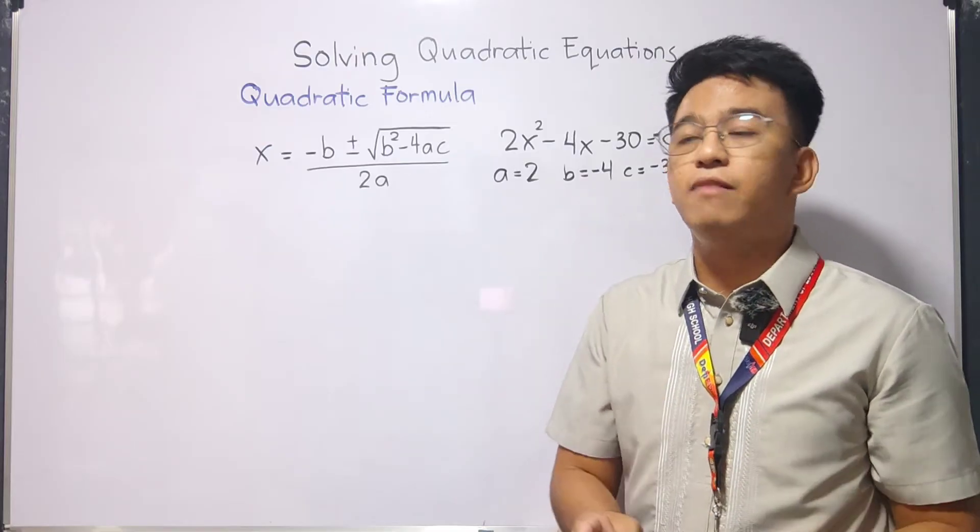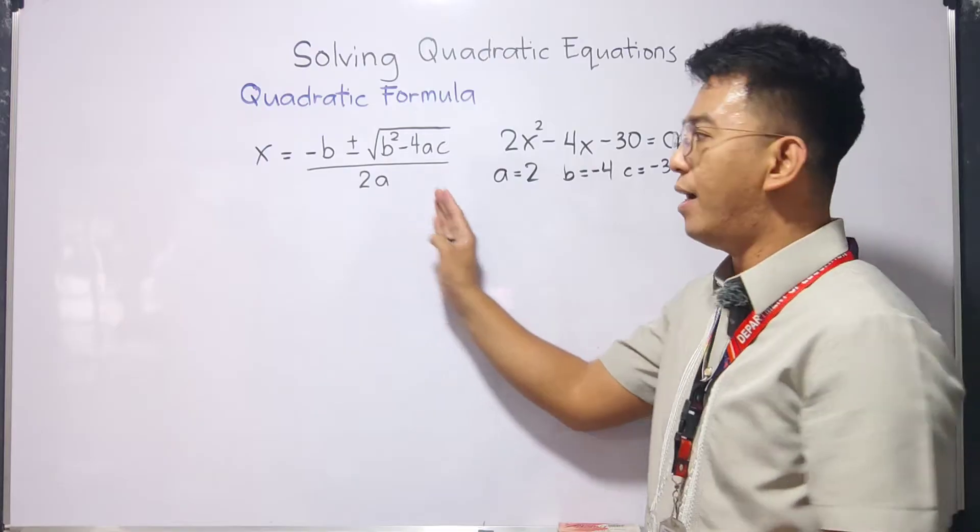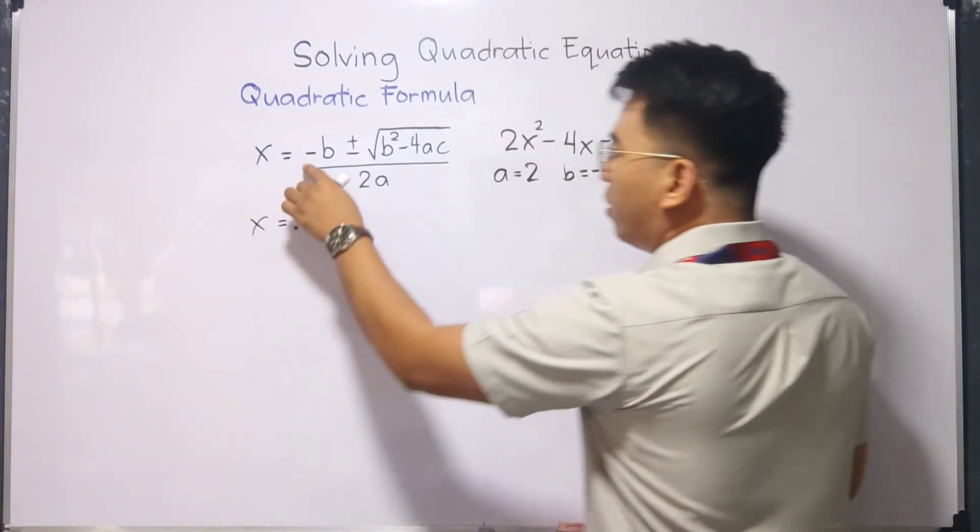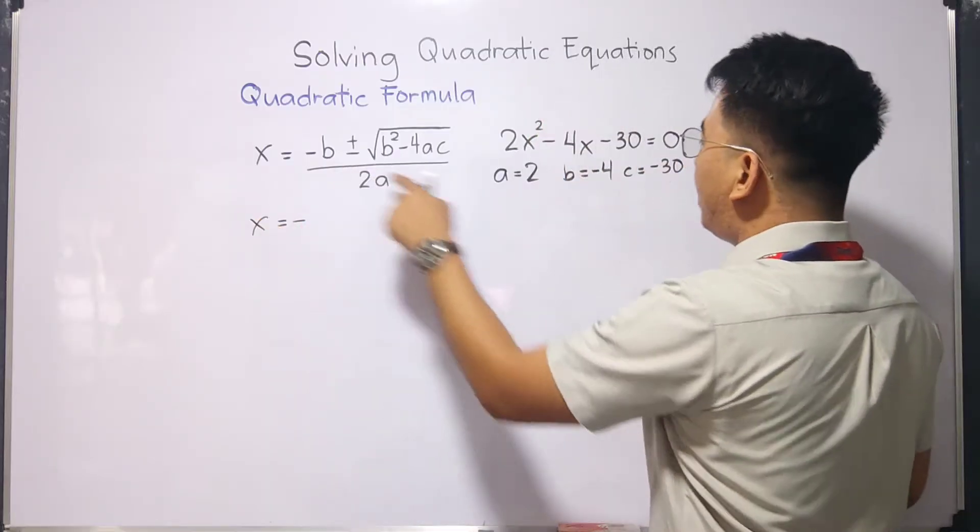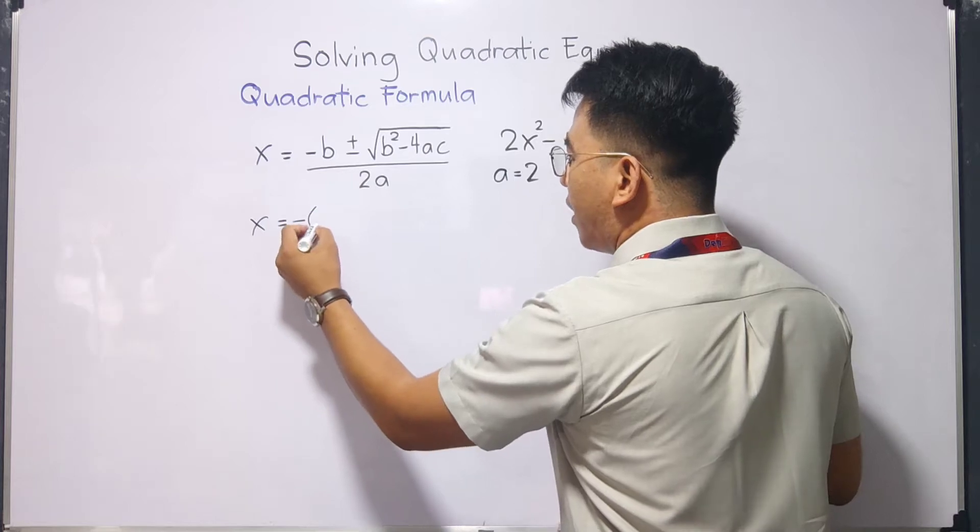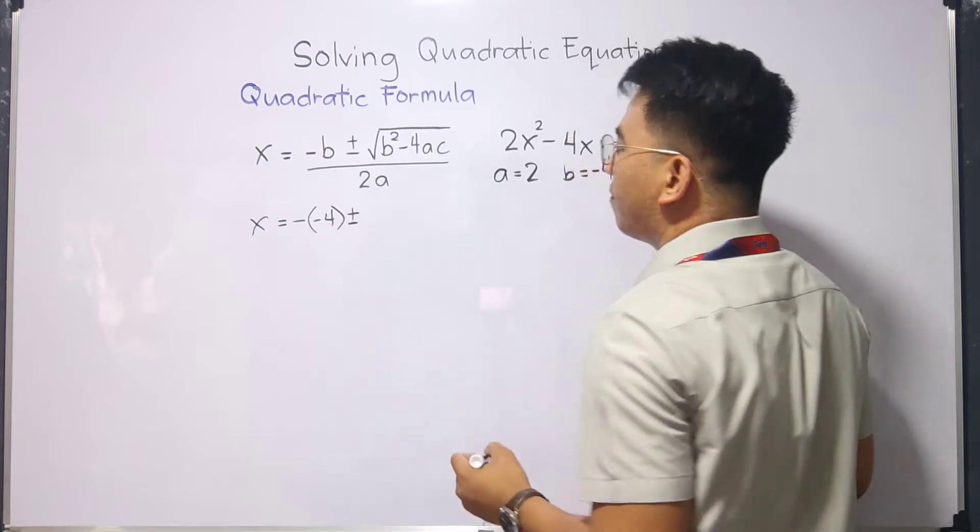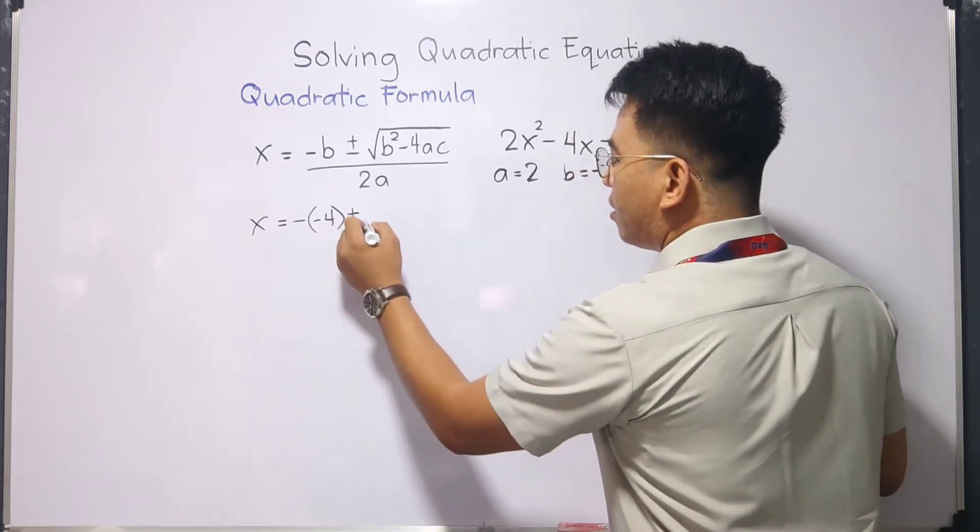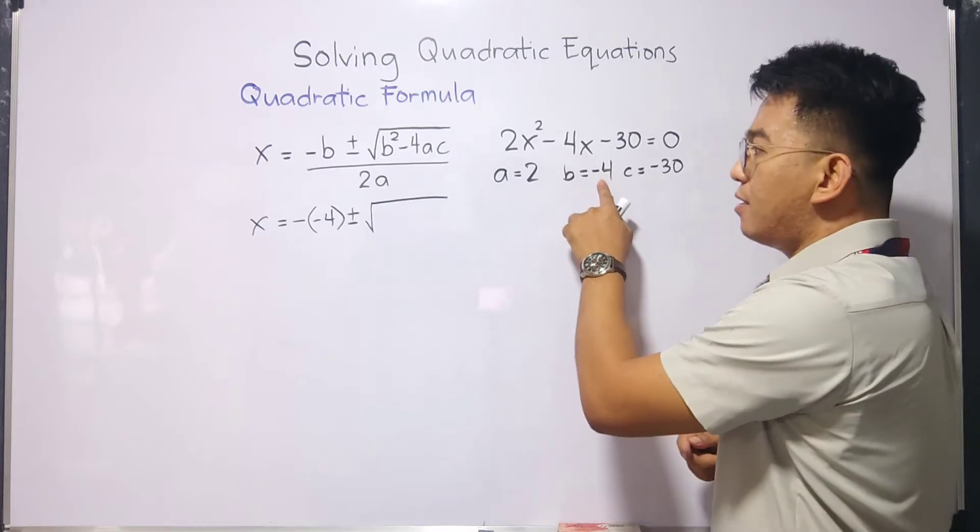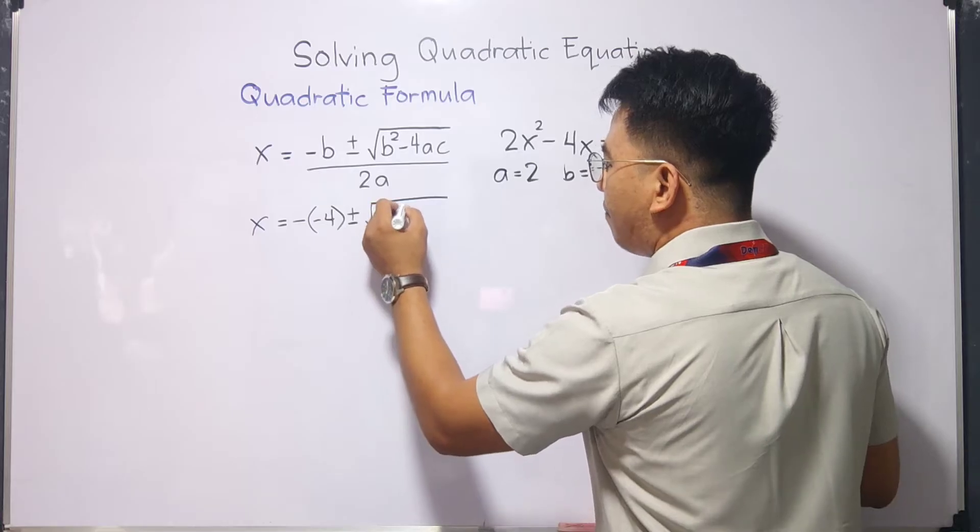Now, after identifying or determining the values of a, b, and c, we can use the formula. You have here x is equal to negative. Your b is negative also. So you can enclose it by parenthesis. You have negative 4. Then you have positive, negative. Then after that, square root of b squared. This is negative 4, guys. You have to enclose it by parenthesis. Negative 4 raised to the second power.